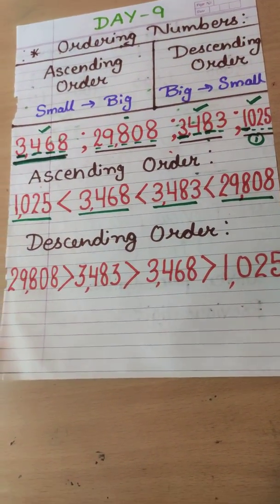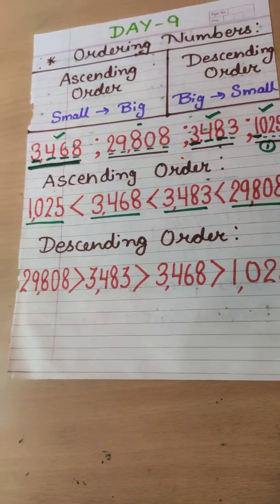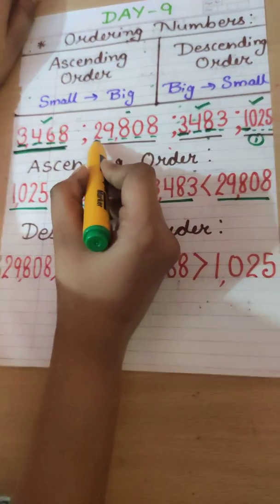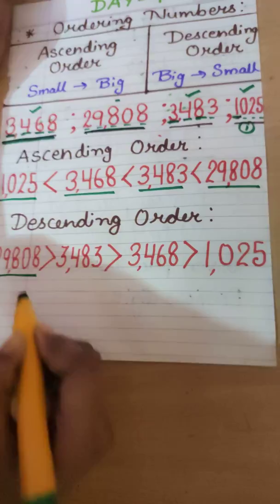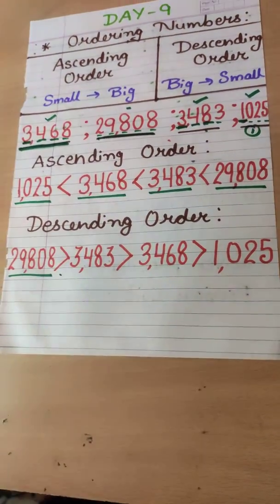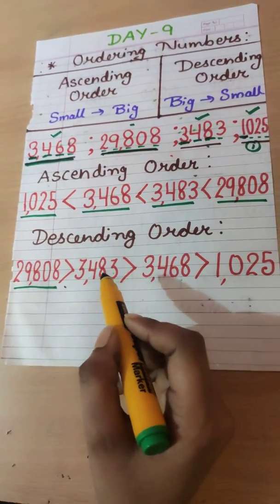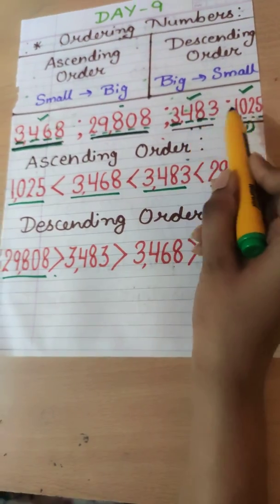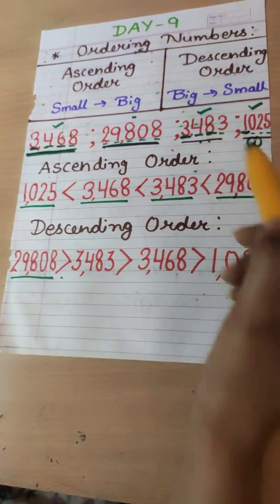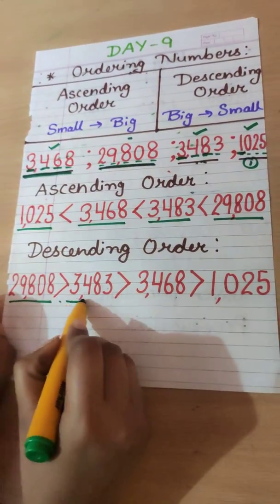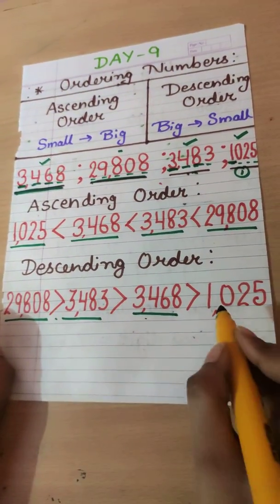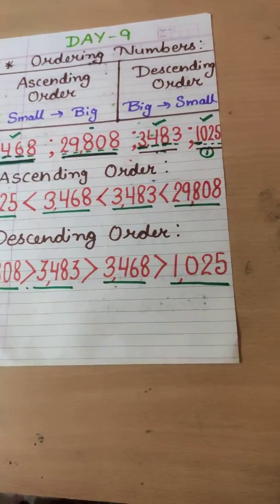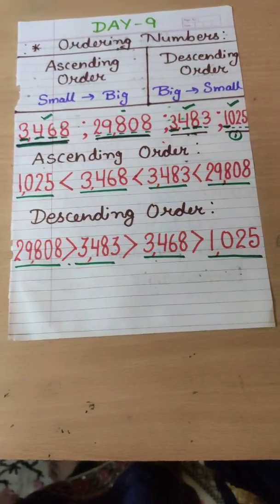Now let's find our descending order. In descending order, first we put the number which has the greater number of digits, so 29,808 comes first. Then, comparing the remaining numbers, 3,483 is greater than 3,468, so 3,483 comes next, then 3,468, and at last 1,025. So this is the way we can compare and order our given numbers in ascending as well as descending order.